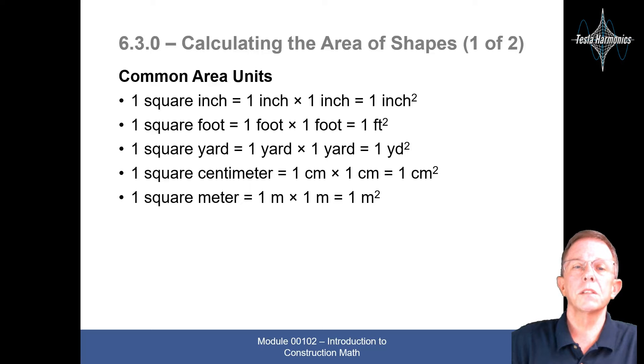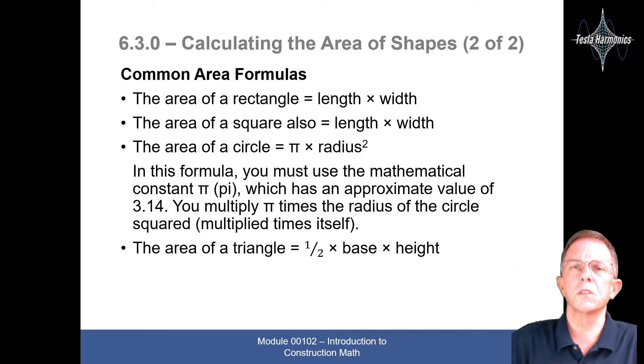Common area units. One square inch equals one inch times one inch equals one square inch. One square foot is one foot times one foot is one square foot. A square yard is one yard times one yard equals a square yard. A square centimeter is a centimeter times a centimeter equals a square centimeter. And a square meter is a meter times a meter equals a square meter.